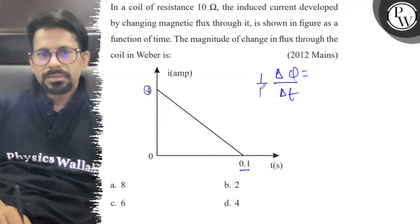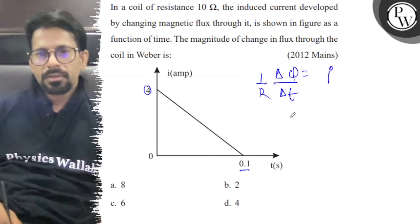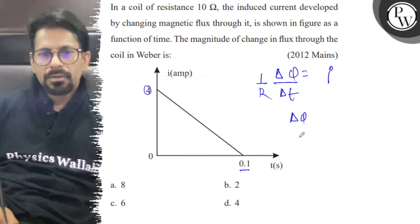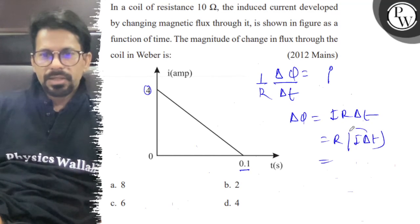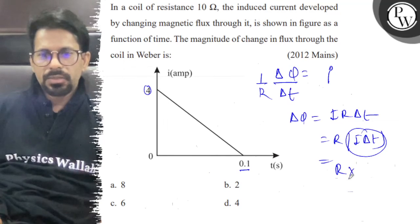1 by R is equal to I. So, del phi is equal to I into R into del t. So, R I into del t. This is the area under curve, R into area.